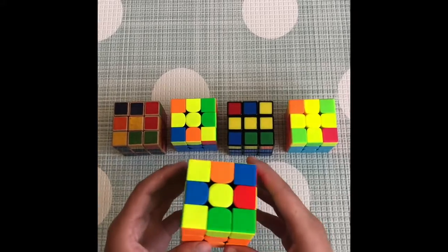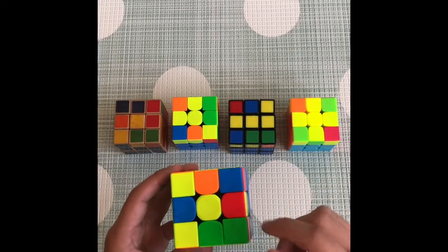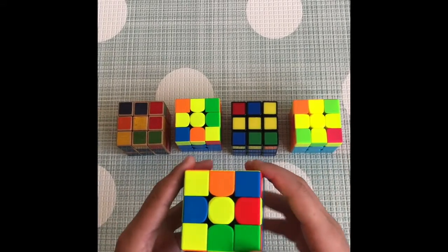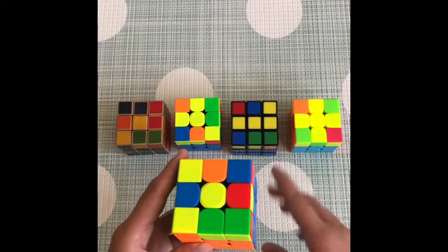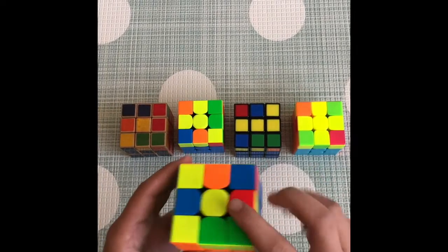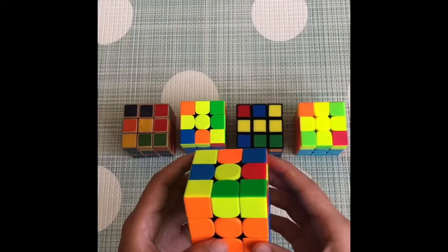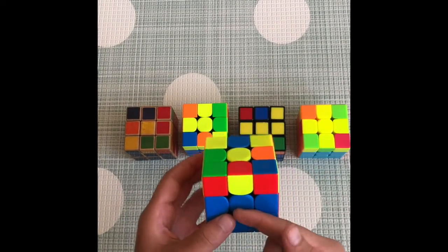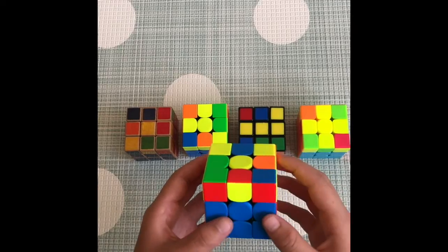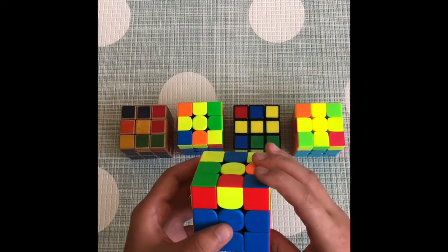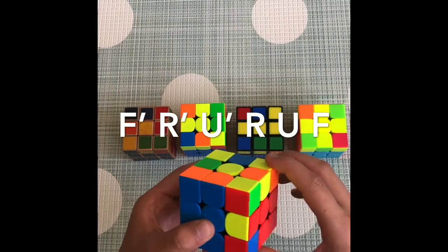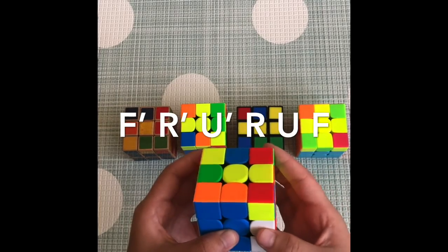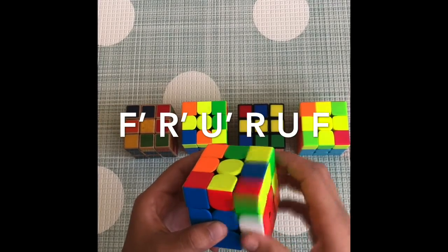So let's start with the first possibility if you have a yellow center. If you only have the yellow center, face the cube any way you want. In this case I'm going to do blue facing me. And then do this algorithm: F inverted, R inverted, U inverted, R, U, F.